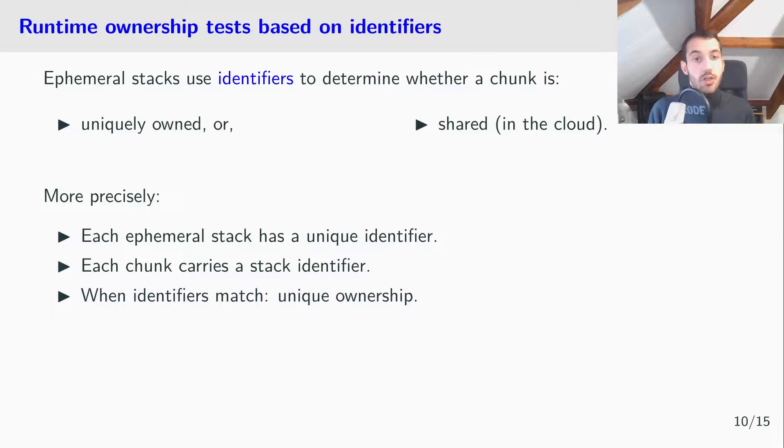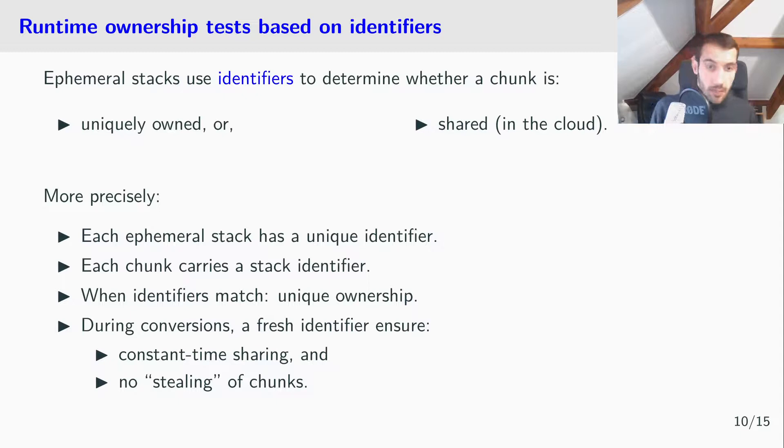This is very useful during conversions. Why? Because when going from ephemeral to persistent, we will simply generate a fresh identifier for the ephemeral stack to share all of these chunks. And in the other direction, when going from persistent to ephemeral, the new ephemeral stack will have a fresh identifier to ensure no stealing of chunks.